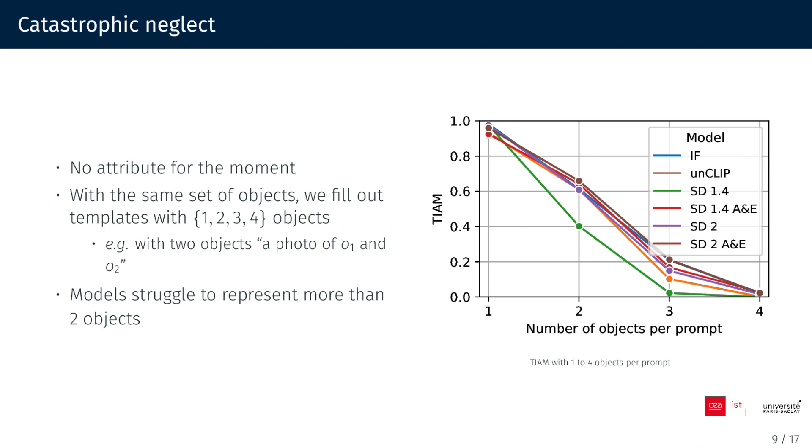We begin by evaluating catastrophic neglect by using only a set of objects. Using this set, we fill out templates with 1, 2, 3, and 4 objects. You can see that models struggle to represent more than 2 objects, achieving less than 20% of successful images with 3 objects in the prompt.